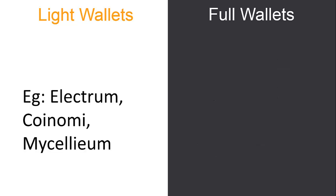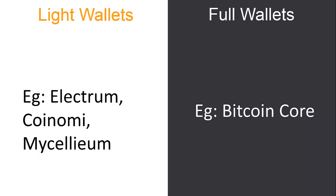Here are a few examples: for light wallets, you have Electrum for desktop, Coinomi for Android, and Mycelium for mobile phones. For full wallets, Bitcoin Core is a well-known example that you can download on a computer.